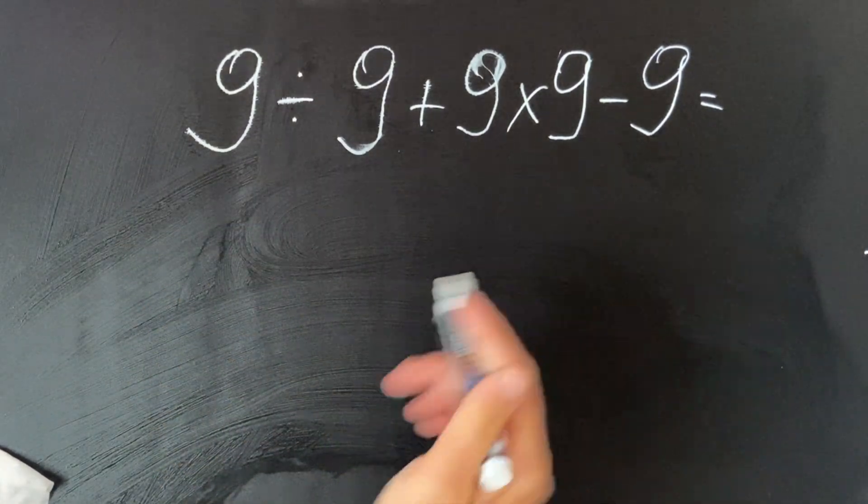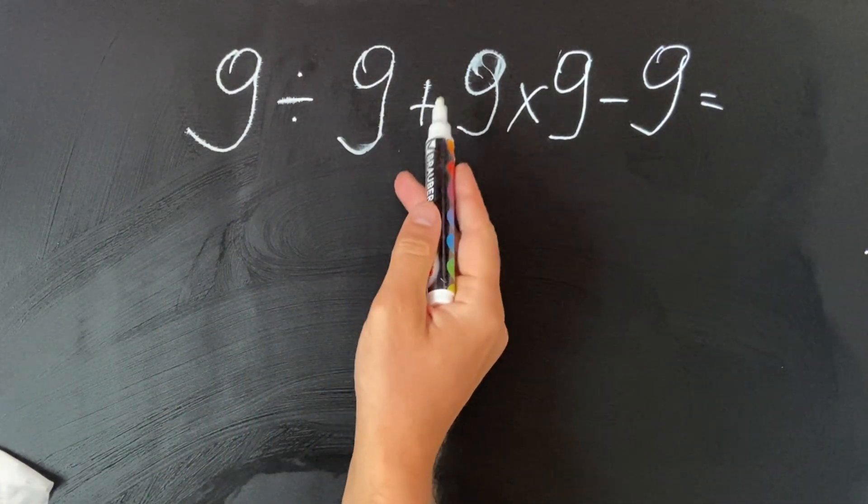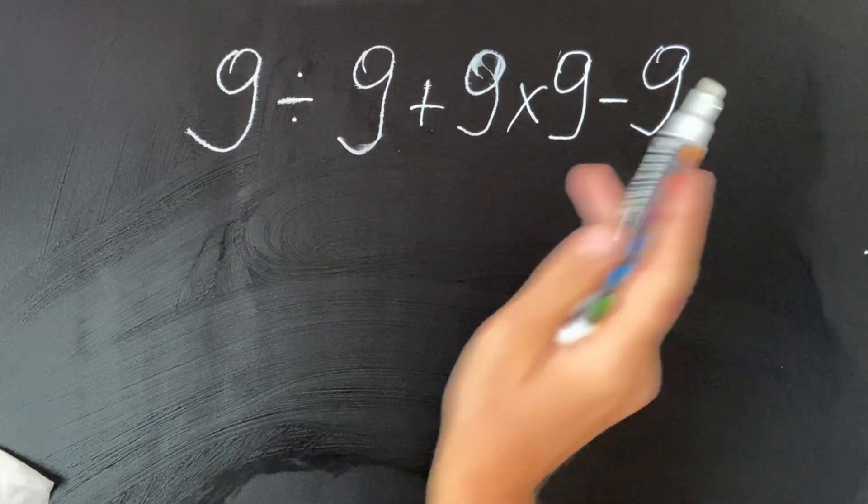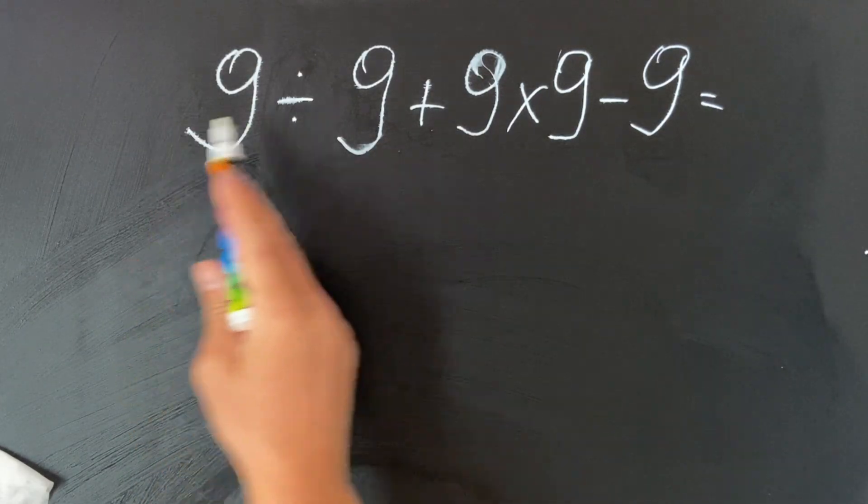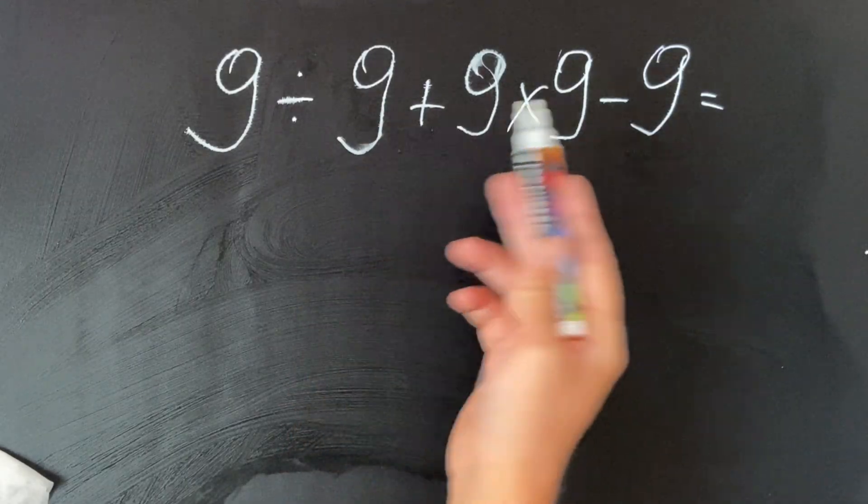Hello everyone, can you solve this equation? 9 divided by 9 plus 9 multiplied by 9 minus 9. What most people do is solve this equation from left to right without paying attention to the order of operations.